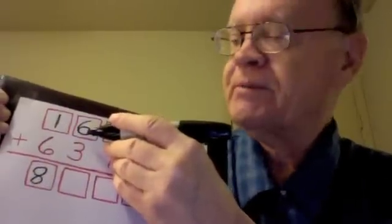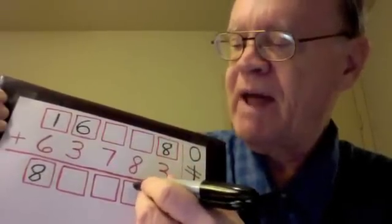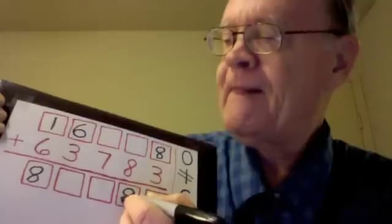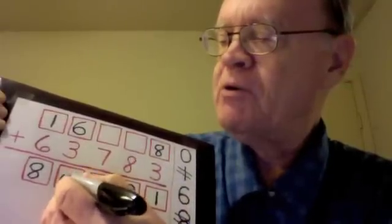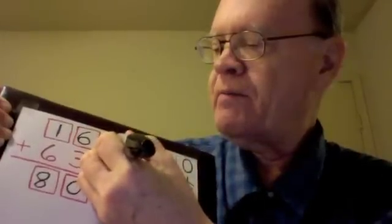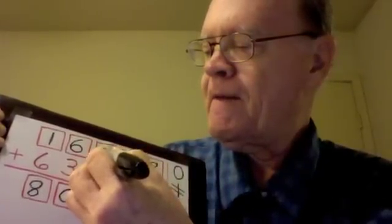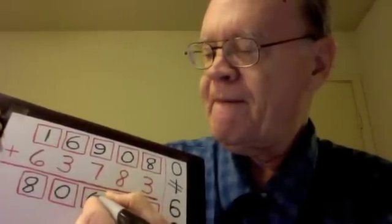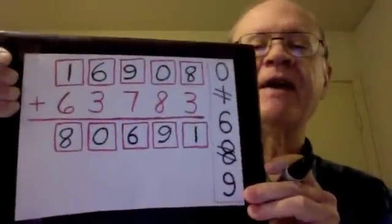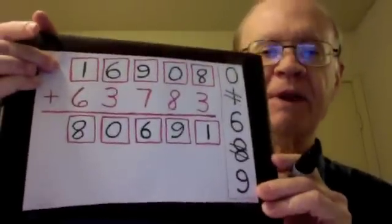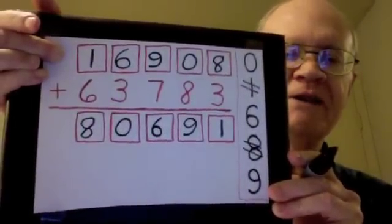So we should try a 6. If that's 6, this will have to be a 9. These will be 0s. And this will be a 9. Which means this will have to be a 6. And we see that everything adds up correctly. So this is the original license plate, the correct license plate, 16908.